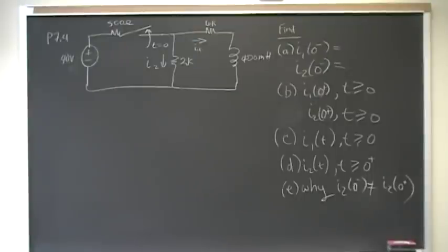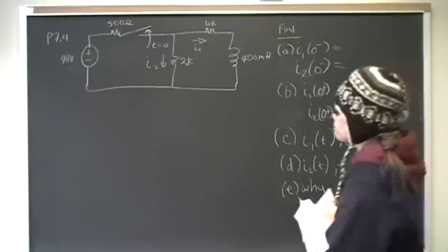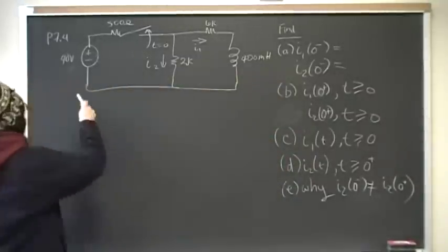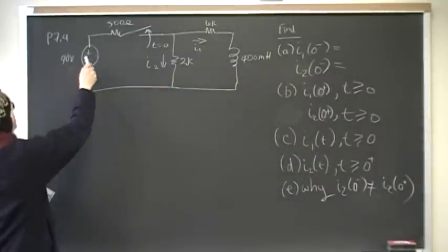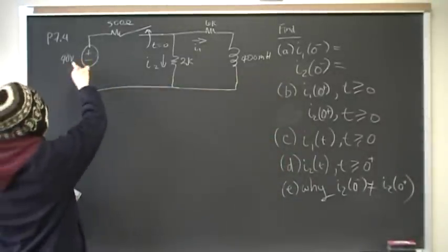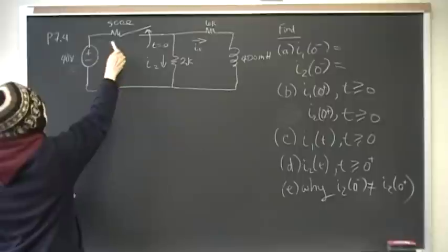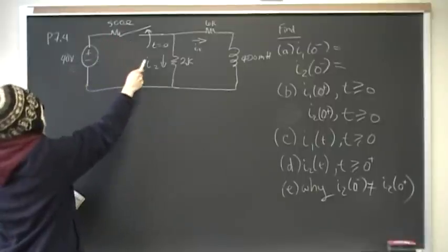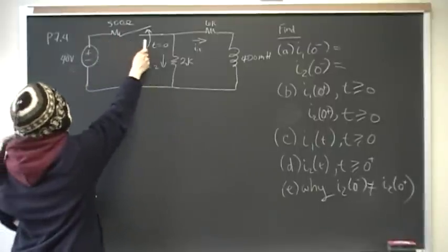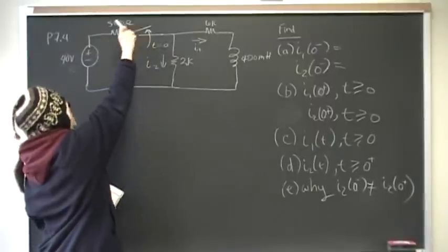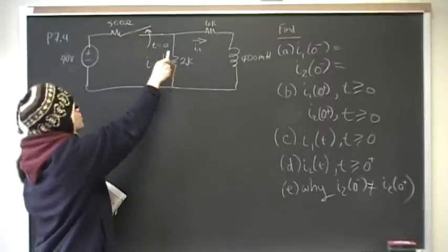This is problem four from chapter seven. We have a 40 volt independent source in series with 500 ohms. At time zero, the switch is closed, but after time zero, the switch will open.